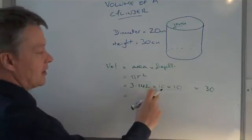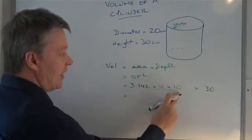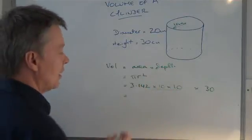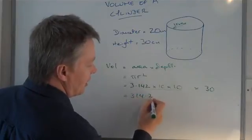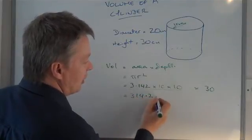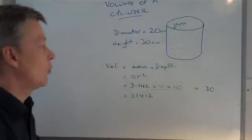So 3.142 times 10 times 10 will give me the area of this top circle, which is 314.2 centimeters squared.